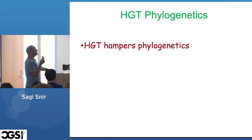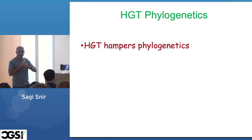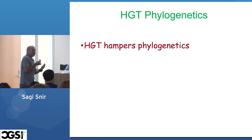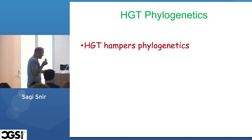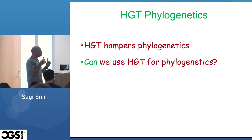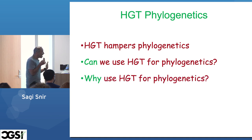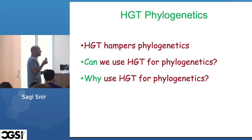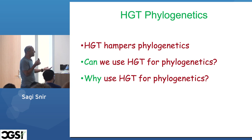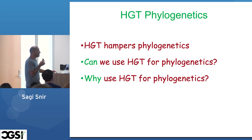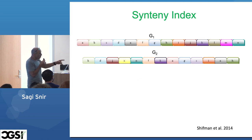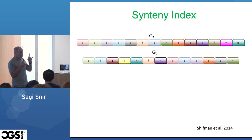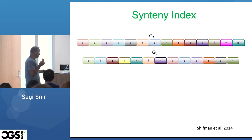HGT hampers phylogenetics — it is by no means a tree-like mechanism or process. Can we use HGT for phylogenetics? This is one question. The other question is: why do that? We have other mechanisms, so why use HGT for phylogenetics? Quite a few years ago we introduced the Synteny index trying to answer the first question — can we do something about it?